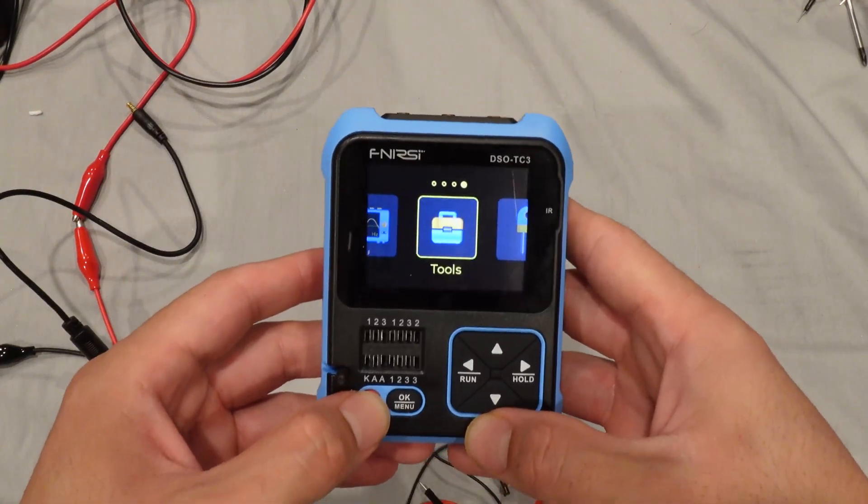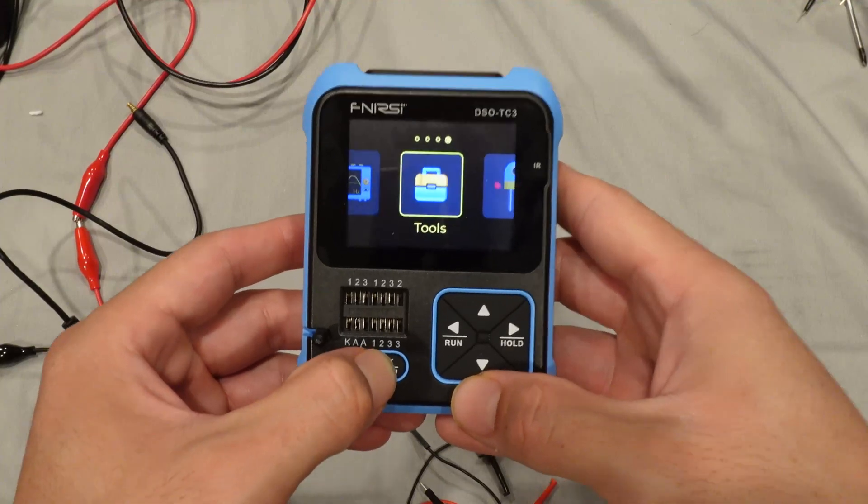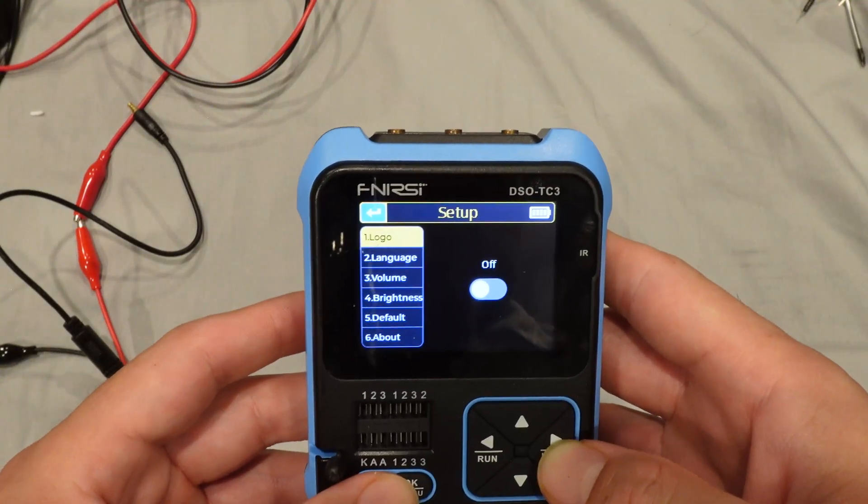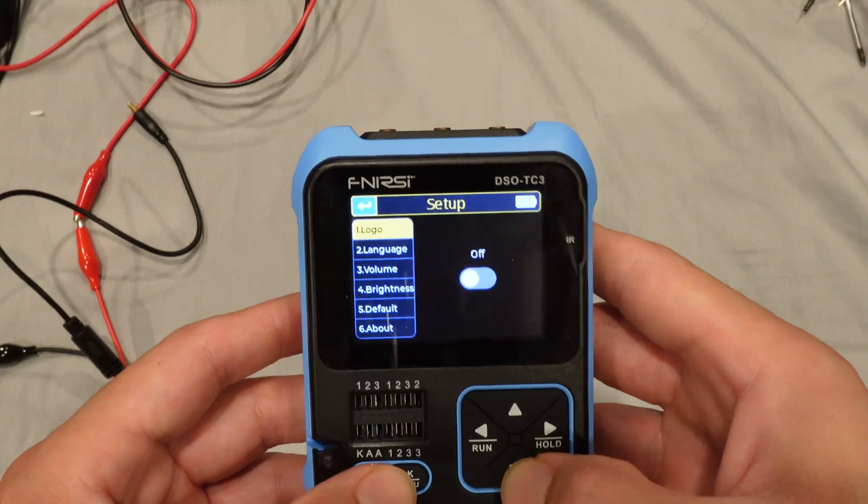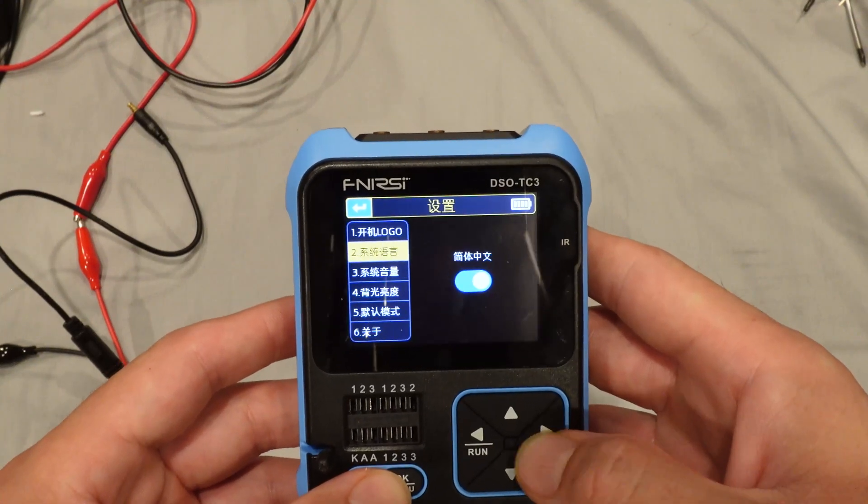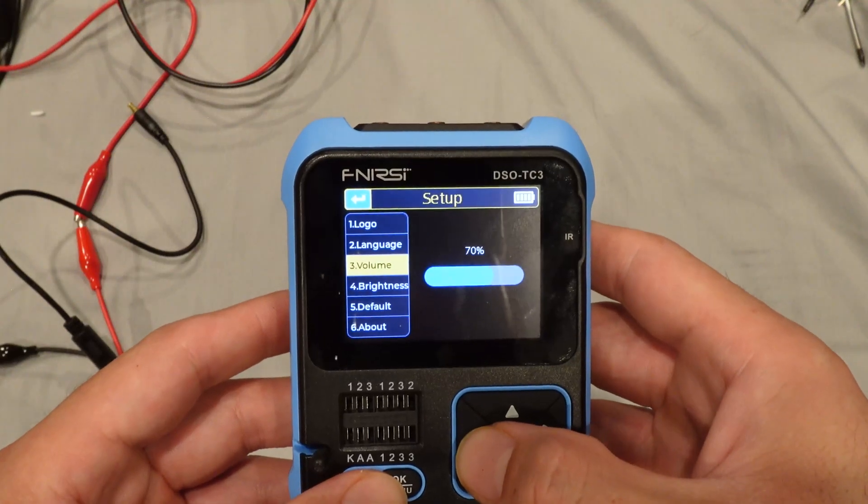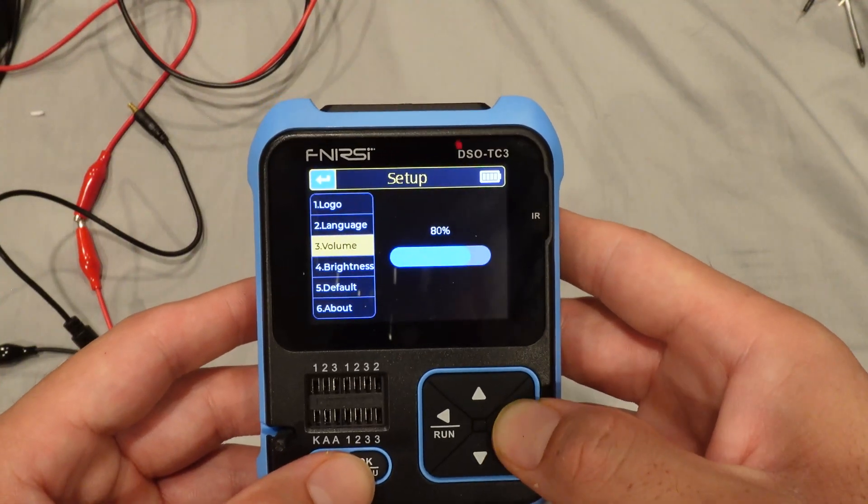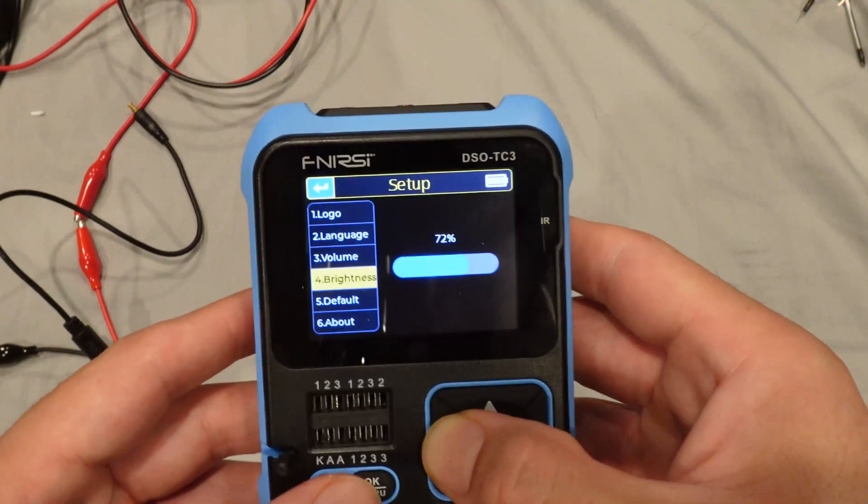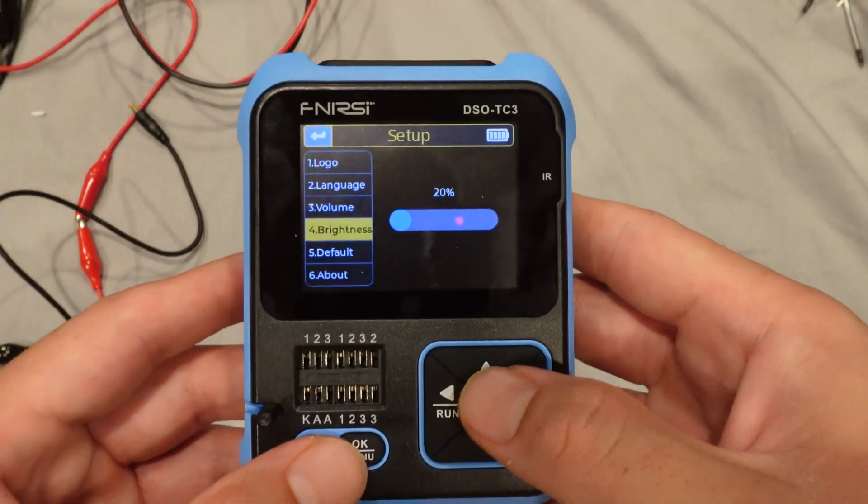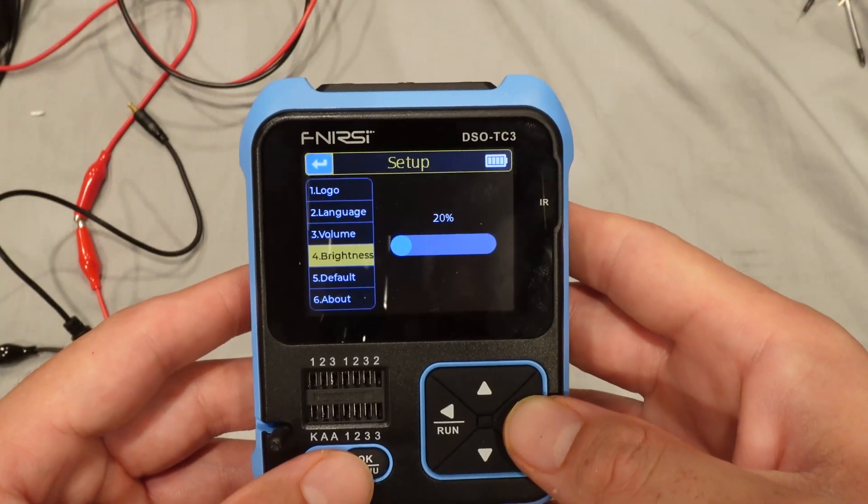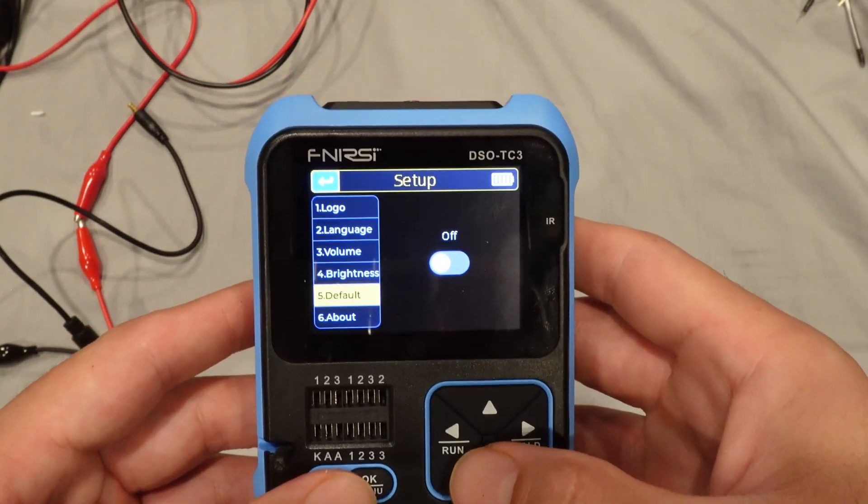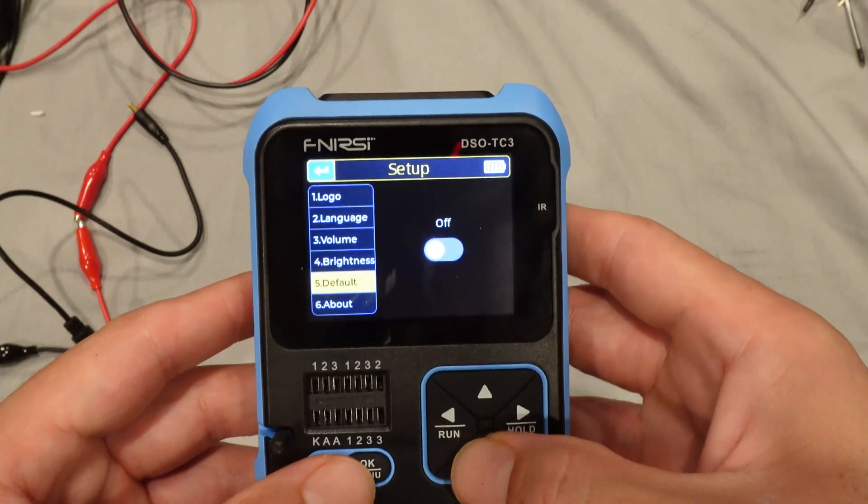Another thing that this one can do, by holding down this, we can go to settings. We can choose to see the logo of Fenerci at the beginning or not. You can change the language, which is just Chinese and English. Adjust the volume, just like that. Change the brightness of this screen. The minimum value is 20, which is still visible.